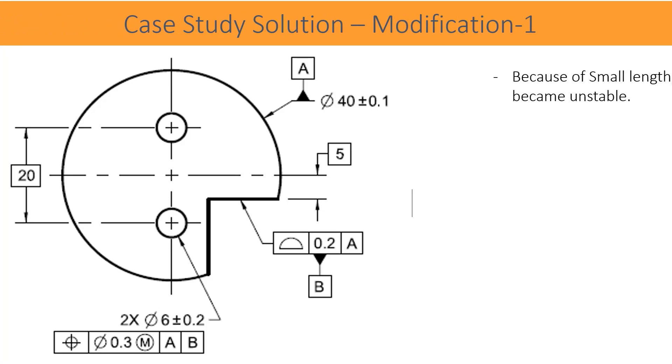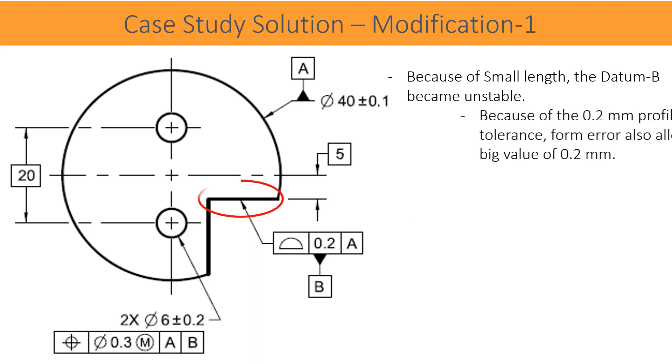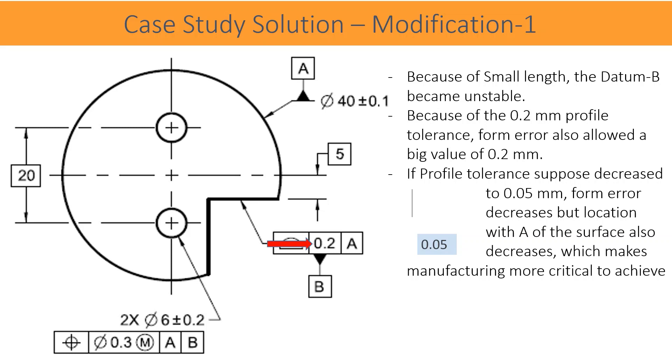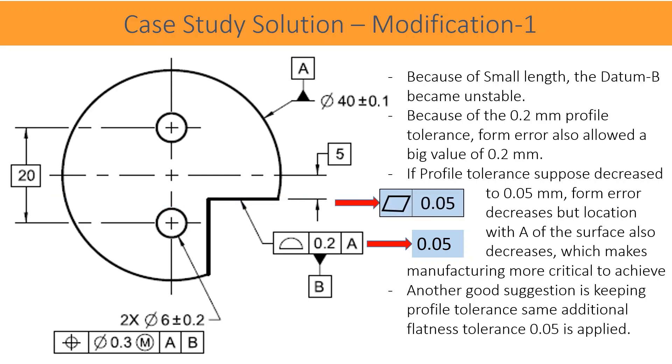Because of small length, the datum B became unstable, because of the 0.2 mm profile tolerance form error also allowed a big value of 0.2 mm. If profile tolerance is decreased to 0.05 mm, form error decreases but location with datum A of the surface also decreases, which makes manufacturing more critical to achieve. Another good suggestion is keeping profile tolerance the same but additional flatness tolerance 0.05 is applied.